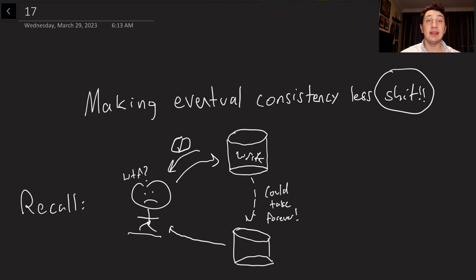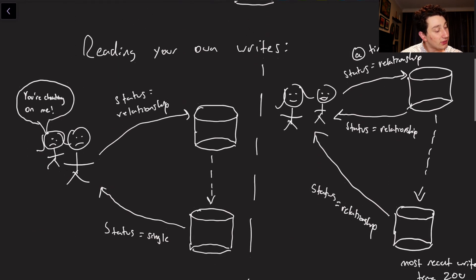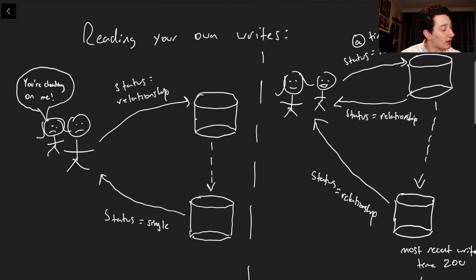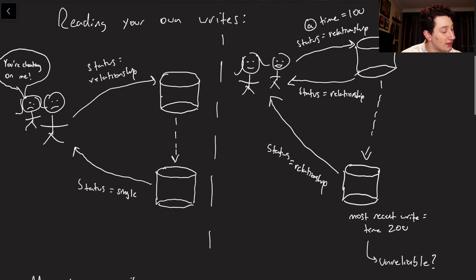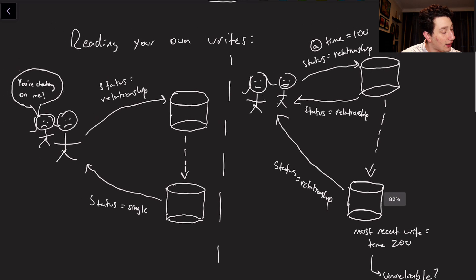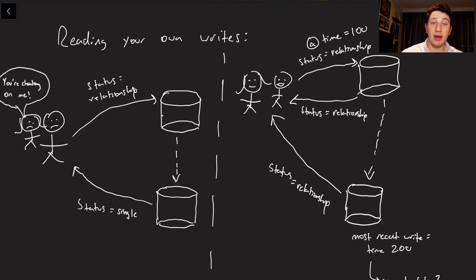So he reads that write, he doesn't see his write from before, and now he's saying what the hell, I thought I just did something but it turns out it didn't go through. So let's look at a few examples of things that could happen when we're dealing with eventual consistency, and we're going to talk about these and basically look at these cases and make sure they don't happen.